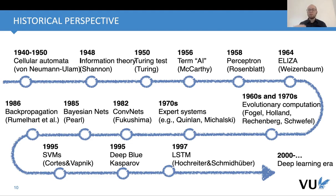We can say that from around 2000, or 2005–2006, there was a huge boom of the deep learning era. And we will see in this course that a lot of work has been done in just the last one or two years. This is the historical perspective.